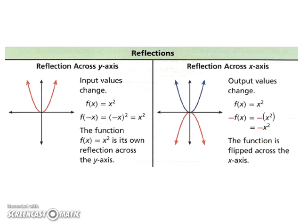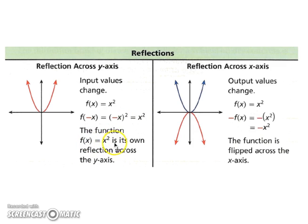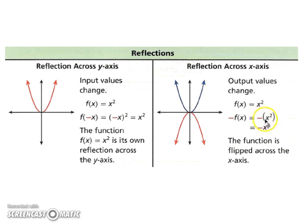Let's look at reflections. For a reflection across the y-axis, your input values change. For f of x equals x squared, f of negative x gives you negative x squared, which in the end equals x squared. So the function f of x equals x squared is its own reflection across the y-axis — it won't look any different. For a reflection across the x-axis, the output values change: the entire function changes and the negative is outside, meaning the parabola will appear upside down.